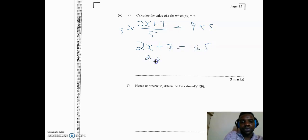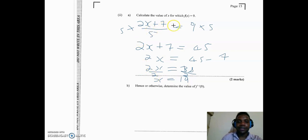We're going to have 2x equal, the 7 comes over, so we have 45 minus 7. So I'm going to end up with 2x equal 38. And of course to get x we divide both sides by 2, so x is equal to 19. Therefore the value of x for which f of x is equal to 9 is equal to 19.